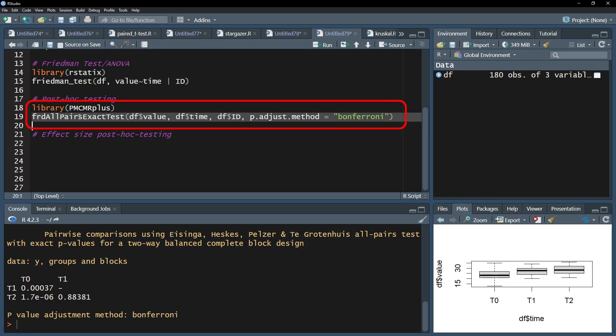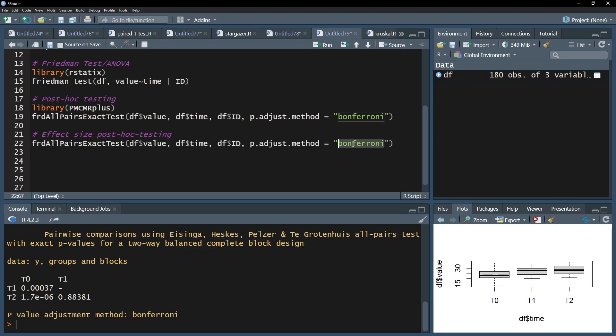I use the FriedmanAllPairsExactTest function to calculate post-hoc tests following a Friedman test. This gives me p-values to work with. However, I need the uncorrected p-values for the following steps.